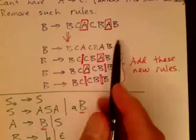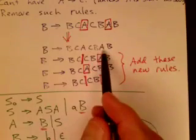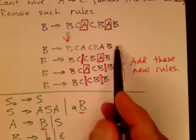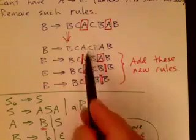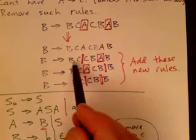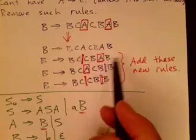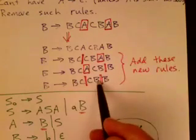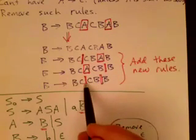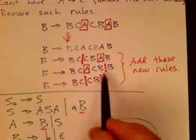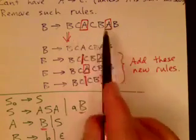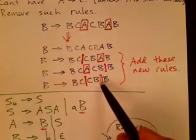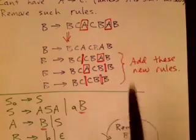The first new rule keeps A in both positions. The second has the first A replaced by epsilon, giving BC, CBA, B. The third has the second A replaced by epsilon. The last removes both A's. So however many A's appear on the right-hand side, we create rules to account for each combination of those A's potentially going to epsilon, and then we eliminate the rule A goes to epsilon.